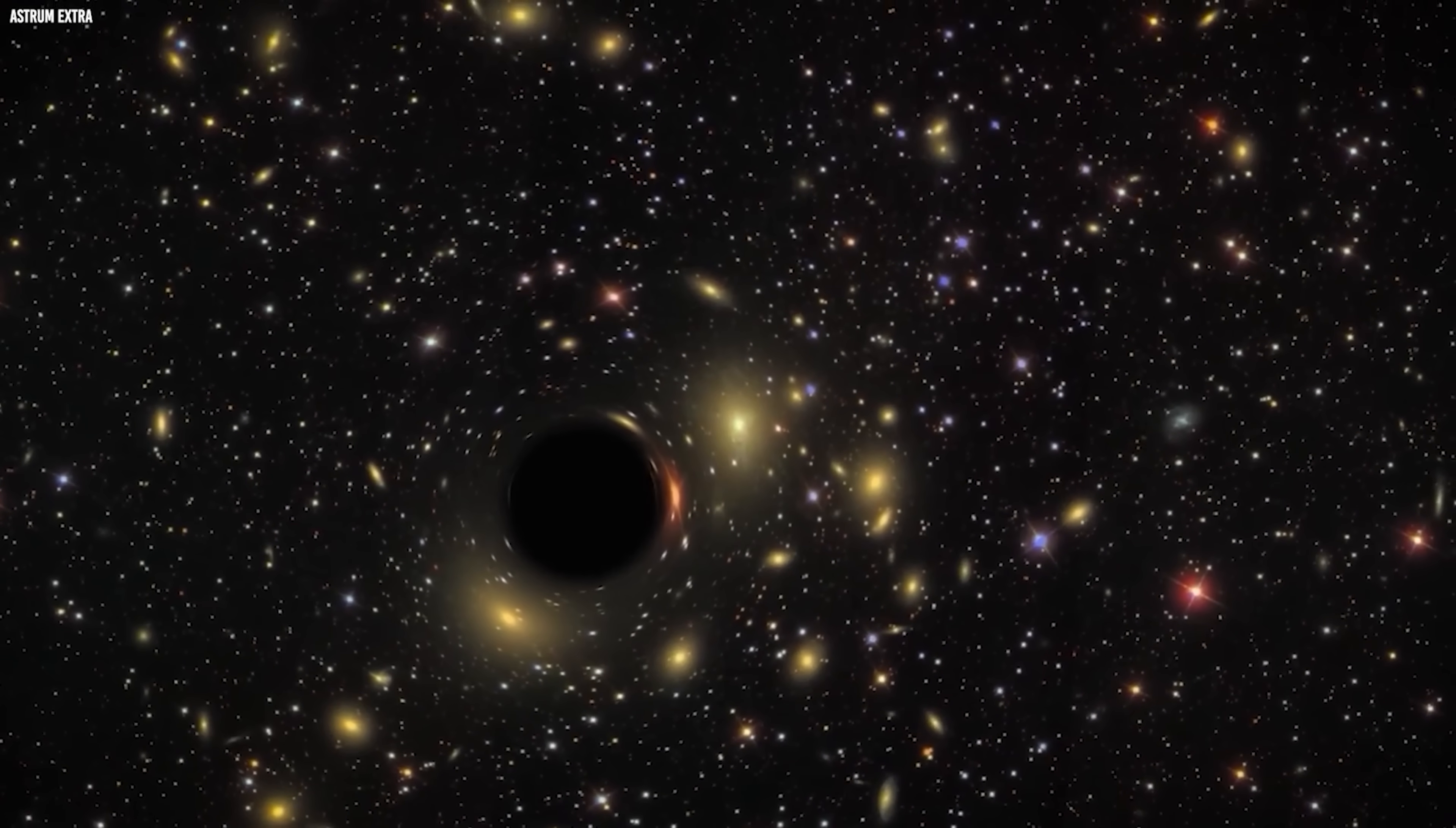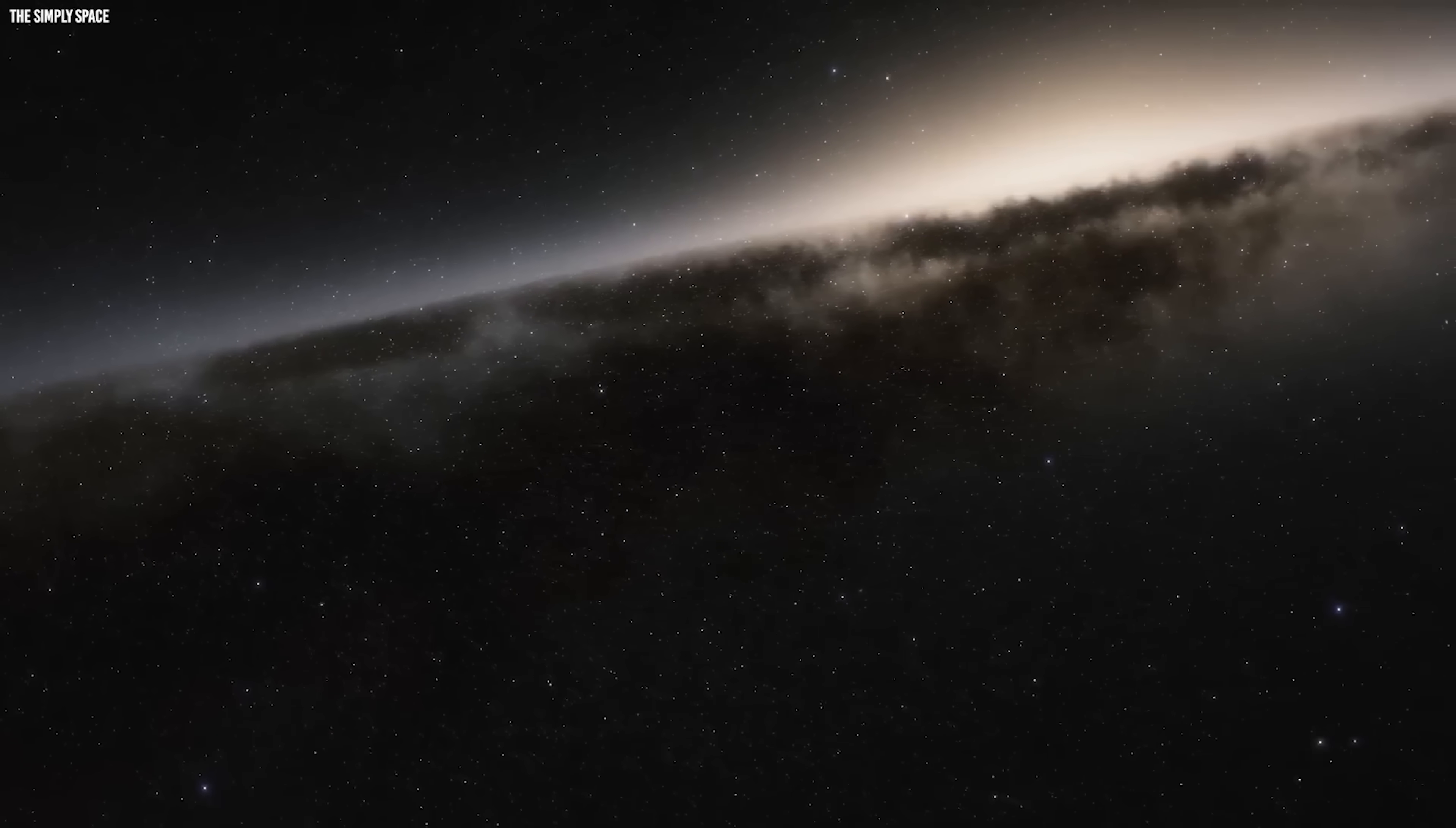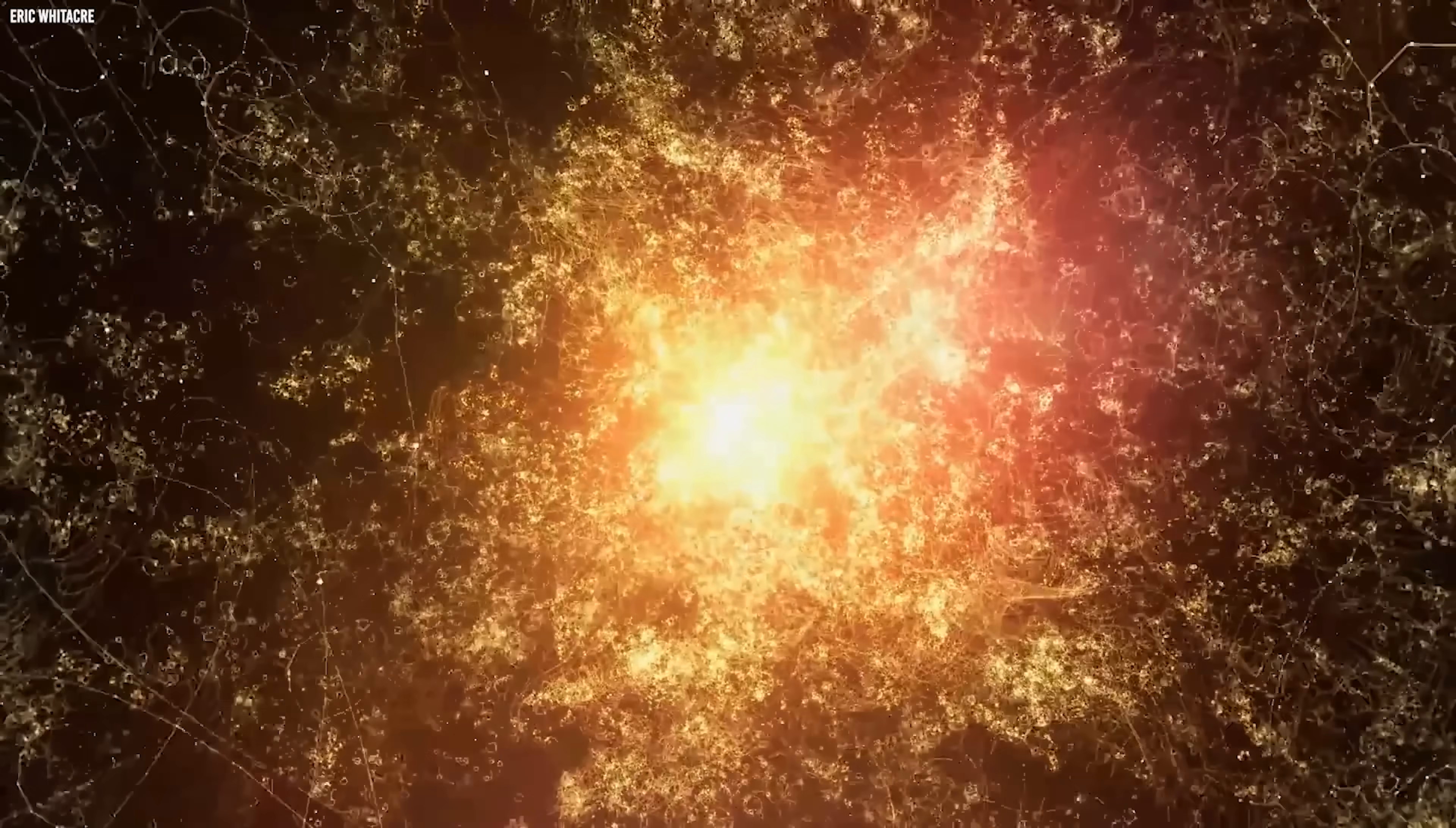If a black hole of this mass were actively feeding, the surrounding gas disk would shine brighter than the entire galaxy. Instead, this one was nearly invisible. Its presence detectable only through its gravitational influence on nearby stars and the faint distortions in velocity patterns.